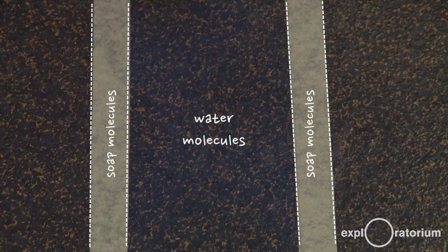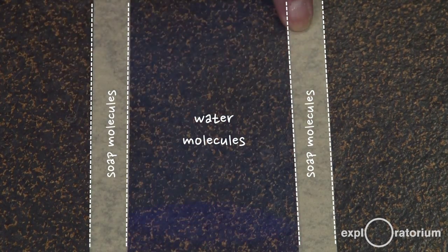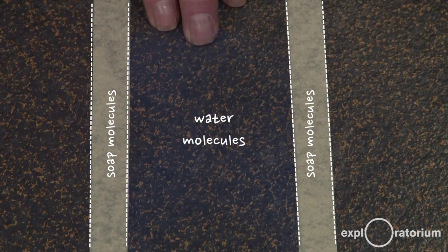A soap film is like a sandwich with soap molecules on both sides of the sandwich and a water soap mixture in between.